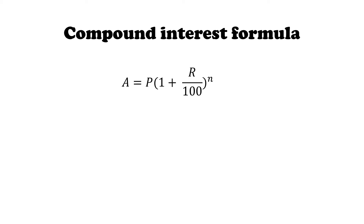The simple interest formula, as you remember from the last video, is PRT — principal multiplied by rate multiplied by time, all divided by 100. The compound interest formula is a little more intricate, but once we learn the formula we should have no problems doing any compound interest question.